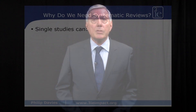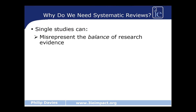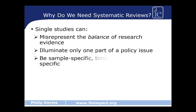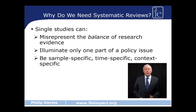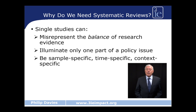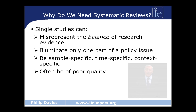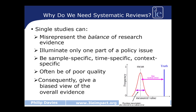We also need systematic reviews because single studies alone can misrepresent the balance of evidence. They can do this by examining only one part of a policy issue, whereas you might be interested in many more issues related to the overall policy. Single studies are usually sample specific, time specific and context specific. They are often of poor quality, so we have to separate out the higher from the lower quality studies. Consequently, unless we do this, we can get a biased view of the evidence.